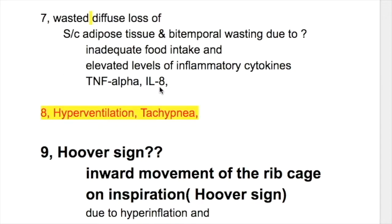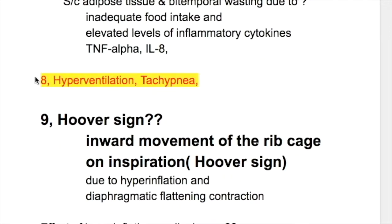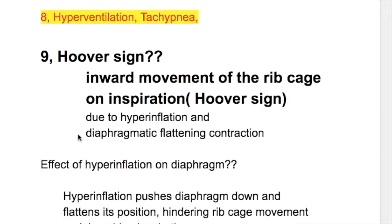Number eight, patients are hyperventilating and tachypneic. Number nine, Hoover sign — inward movement of the rib cage on inspiration is the Hoover sign. Why does it occur?